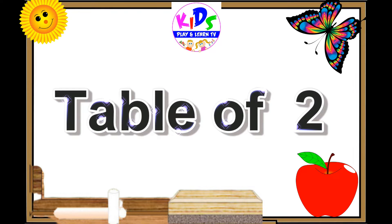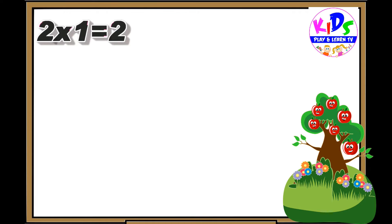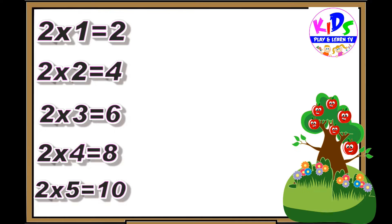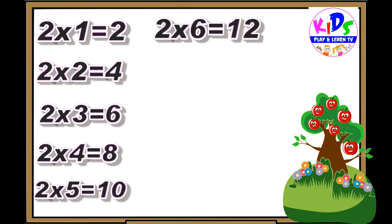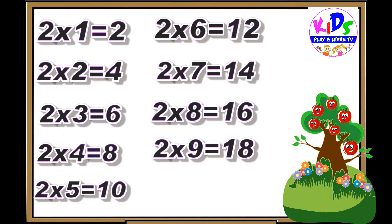Hey kids, let's repeat. Two ones are two. Two twos are four. Two threes are six. Two fours are eight. Two fives are ten. Two sixes are twelve. Two sevens are fourteen. Two eights are sixteen. Two nines are eighteen. Two tens are twenty.